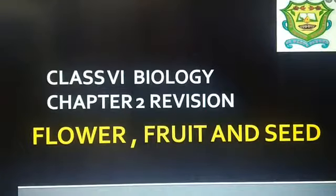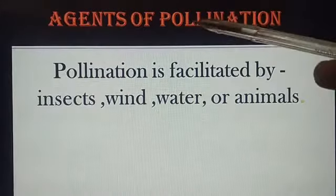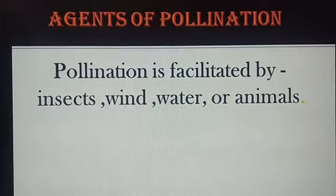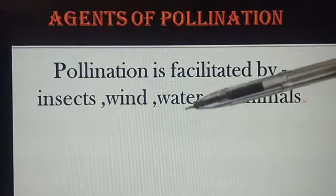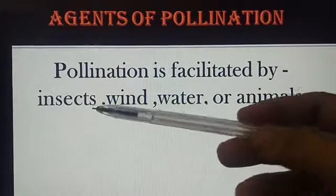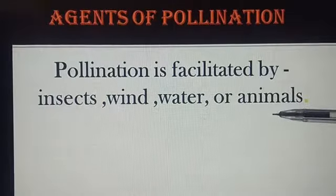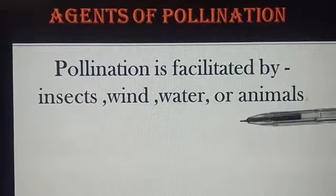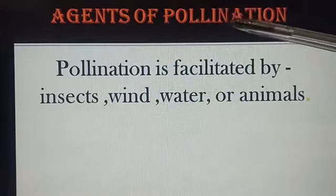Good morning students. Today we will go ahead with the revision of chapter 2, Flower, Fruit and Seed. The pollen grains are transferred from anther to the stigma through insects, wind, water, or animals. They are therefore termed as the agents of pollination.